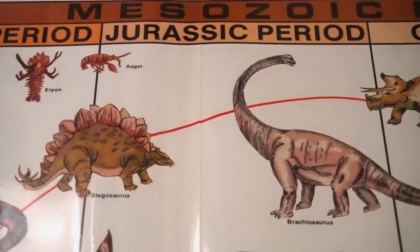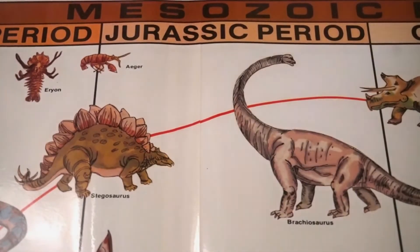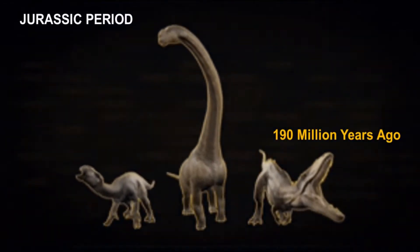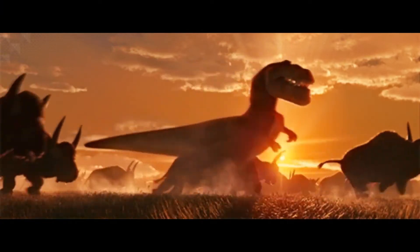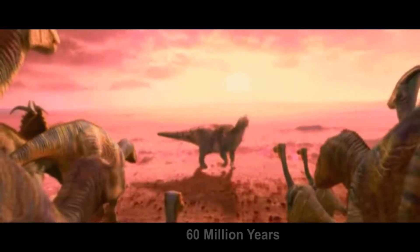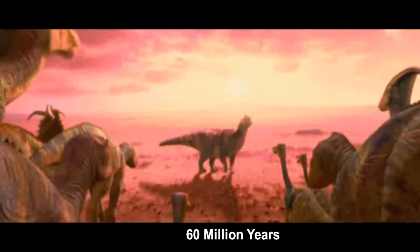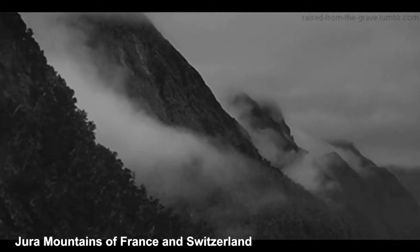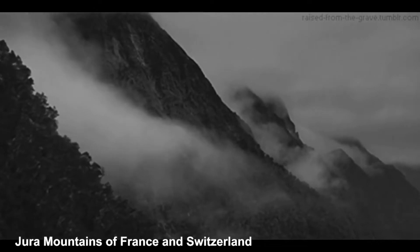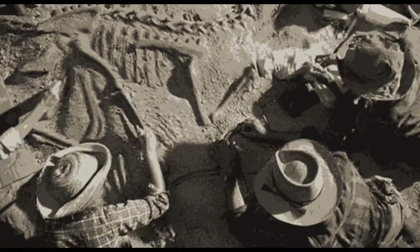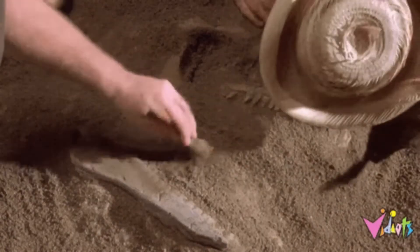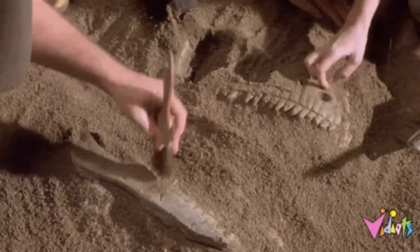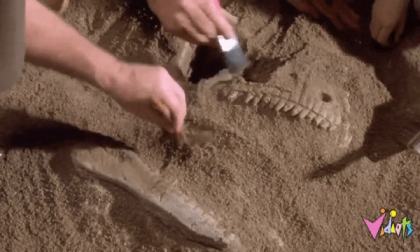The Jurassic period began about 190 million years ago and lasted approximately 60 million years. It is named after the Jura Mountains of France and Switzerland, where fossilized rocks of this period were first studied in 1795.